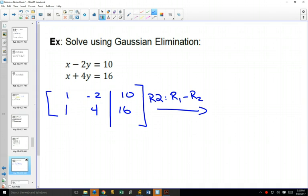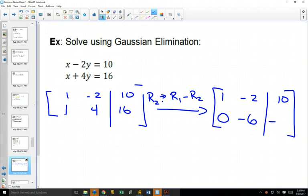What would happen if I did row one minus row two? What am I changing? I'm changing row two. So that means my row one isn't changing, I can rewrite it. Row one's not changing. But I'm going to change row two to make it row one minus row two. What happens when I do one minus one? Zero. So this becomes a zero. What happens when I do negative two minus four? Negative six. And when I do ten minus sixteen? Negative six.